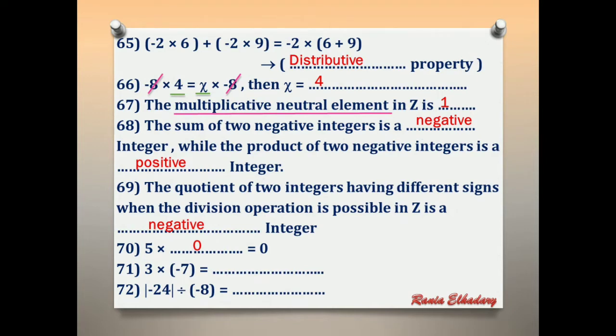Number 71: 3 × negative 7. Positive times negative is negative. 3 × 7 = 21. The answer is negative 21.